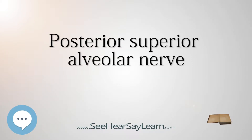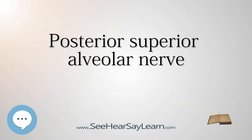The posterior superior alveolar branches, posterior superior dental branches, arise from the trunk of the maxillary nerve just before it enters the infraorbital groove. They are generally two in number, but sometimes arise by a single trunk. They descend on the tuberosity of the maxilla and give off several twigs to the gums and neighboring parts of the mucous membrane of the cheek.